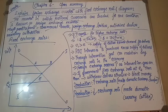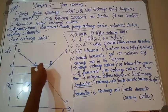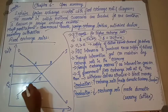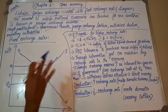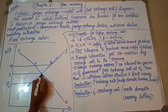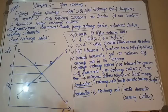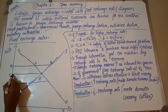Now let me come to the diagram. Here we are recording dollars and rupees, and we are showing the demand and supply of dollars. The demand curve is downward sloping, and the supply curve is in the typical upward shape. We draw the demand curve and supply curve, then find out the equilibrium point — the point where the demand and supply curves intersect. This is the equilibrium point, which we mark as E.